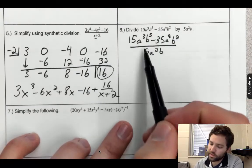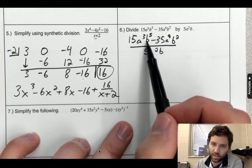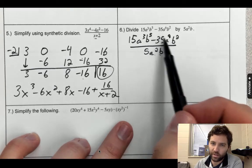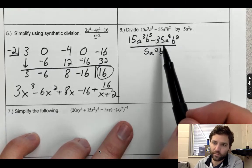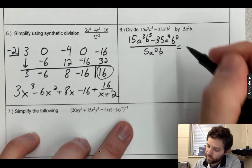you can break it into multiple smaller fractions by taking 15a³b⁵ over 5a²b, and then minus 35a⁹b² over 5a²b, and simplify it that way.